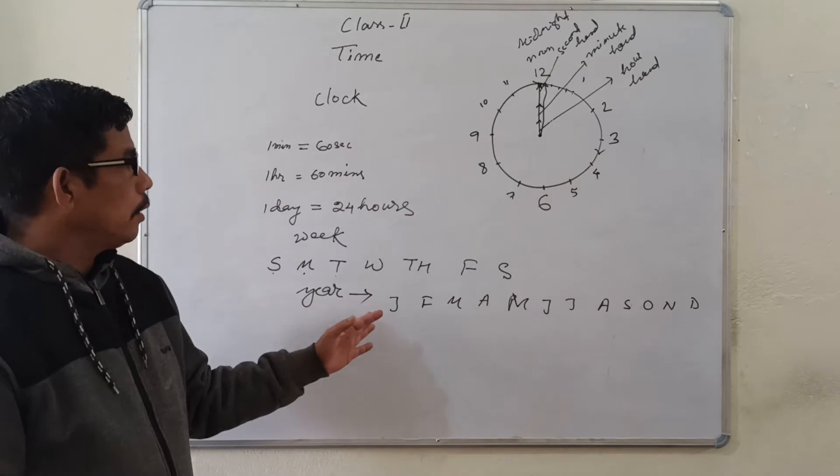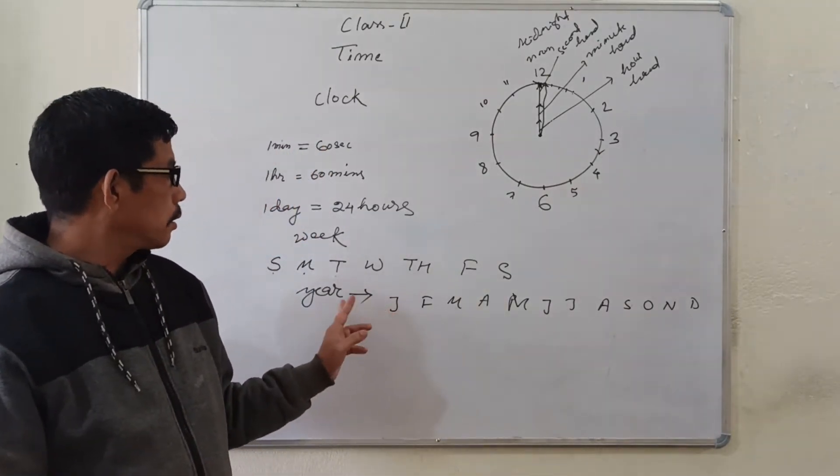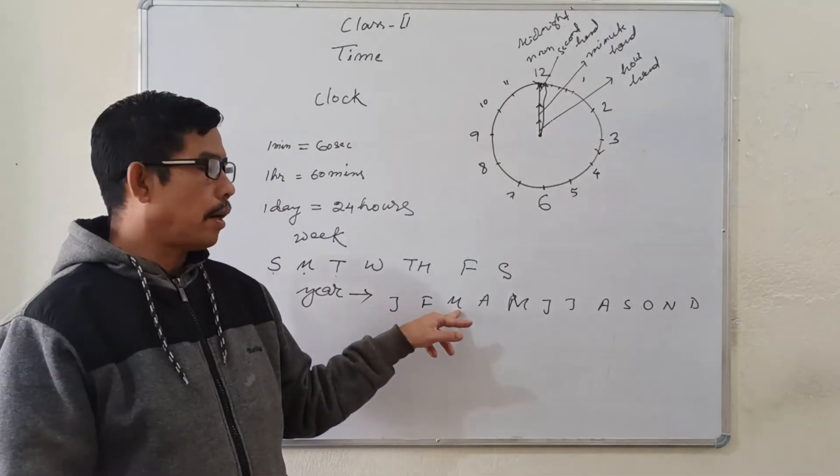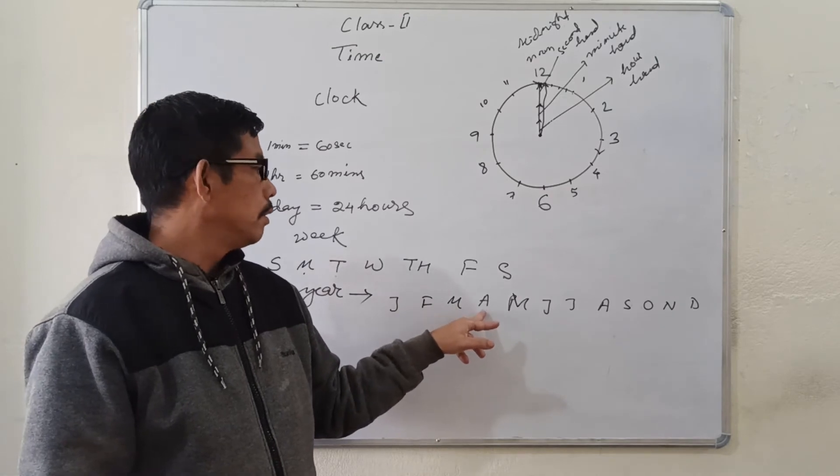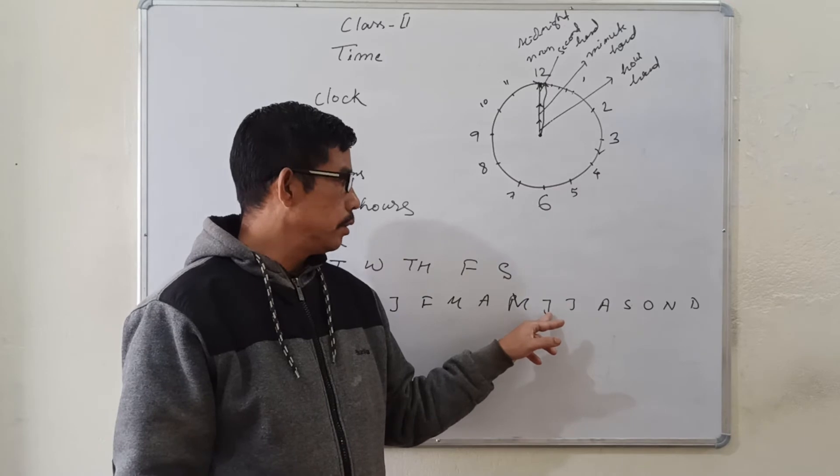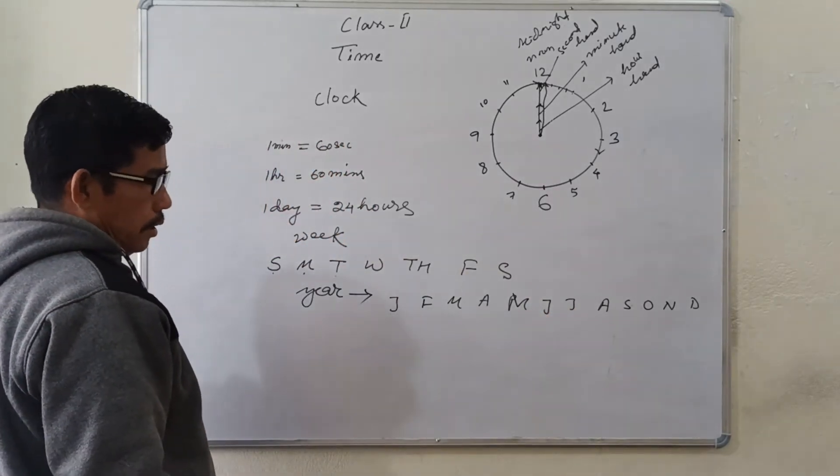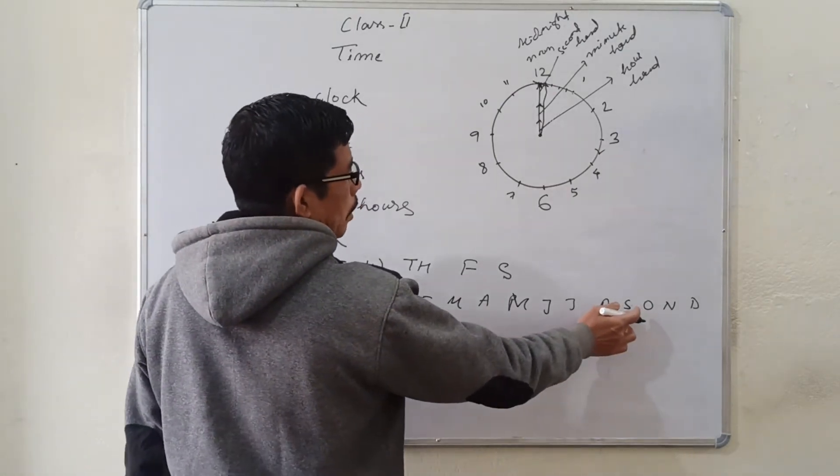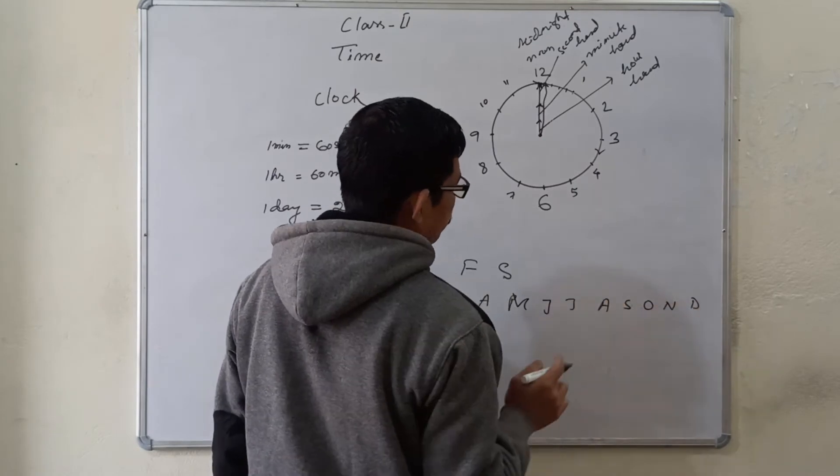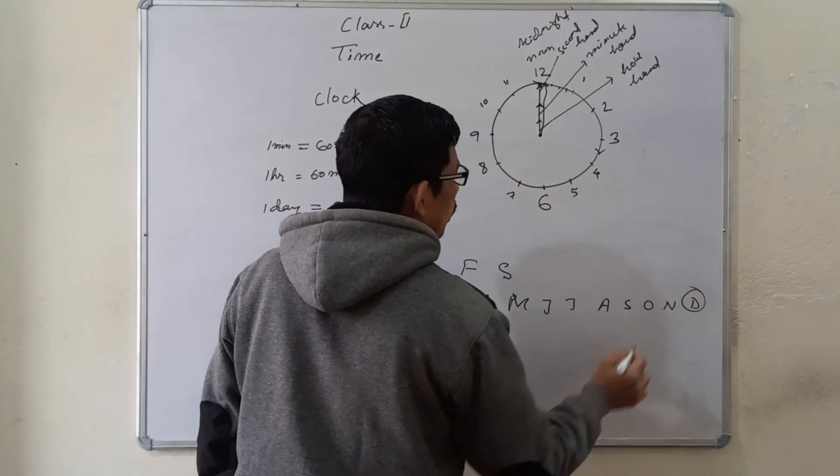So, there are 12 months in a year. The first month of the year is January, second month February, third month March, 4th April, 5th May, 6th June, 7th July, 8th August, 9th September, 10th October, 11th November, and 12th December. This is the first month of the year, and this is the last month of the year.